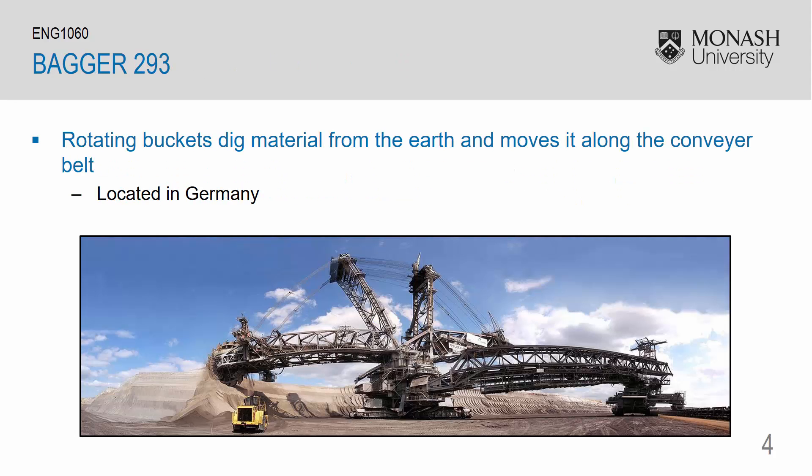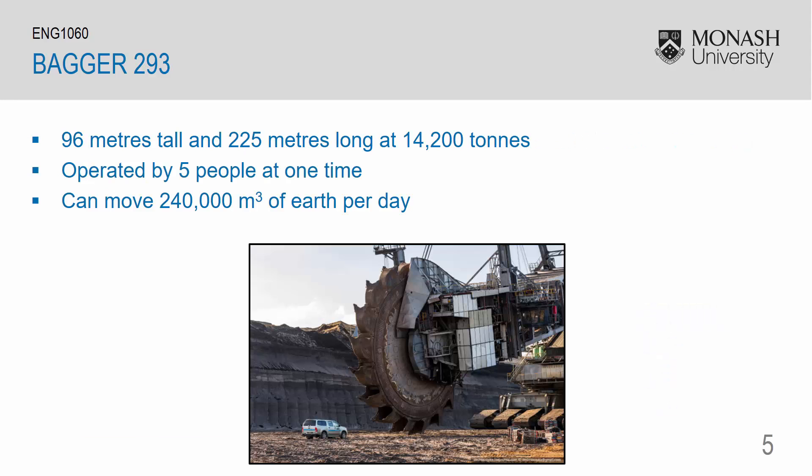So in this multiple output example, we will be looking at the Bagger 293, which consists of rotating buckets that dig material from the earth and move it along a conveyor belt. This machine here is the Bagger 293 and is located in Germany. It is a fairly big structure, 96 meters tall and 225 meters long. It's operated by five people at a time and it can move 240,000 cubic meters of earth per day.